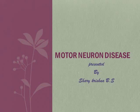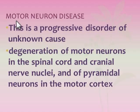This is Shari and we discuss motor neuron disease. Motor neuron disease is a progressive disorder of motor neurons of unknown cause. There is degeneration of motor neurons — it may be of the spinal cord, cranial nerves, or pyramidal neurons in the motor cortex. When motor neurons throughout the nerve system are degenerated, that is called motor neuron disease.